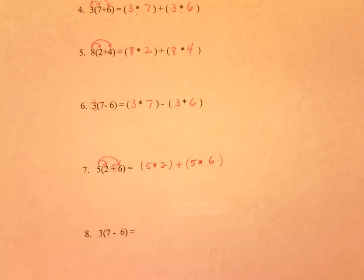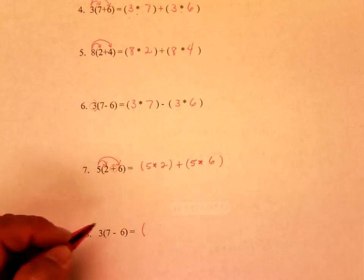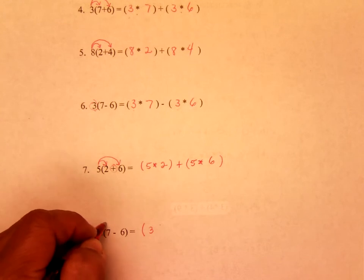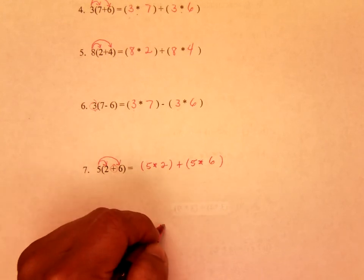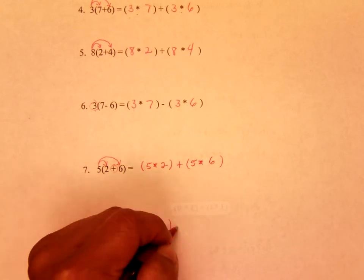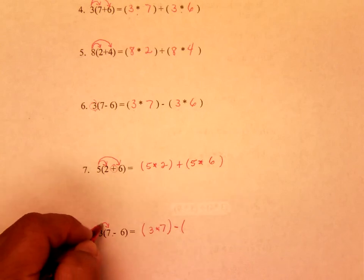Go ahead and try number 8 on your own. And when you're ready, go ahead and push play. So, you should have written 3 times 7, subtraction, and 3 times 6.